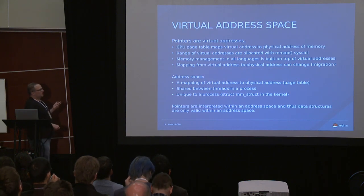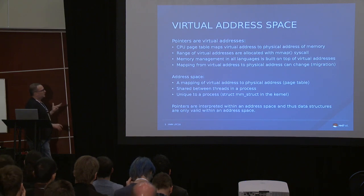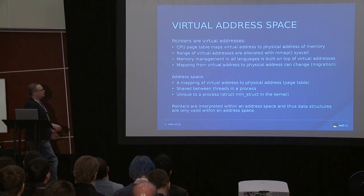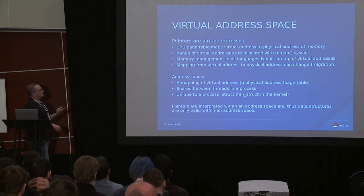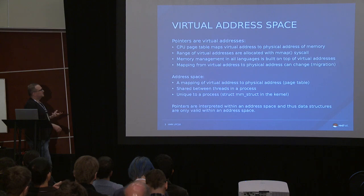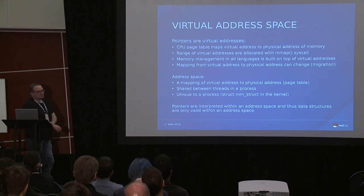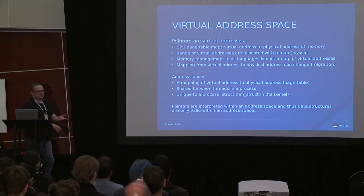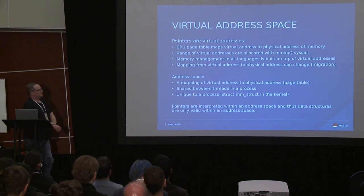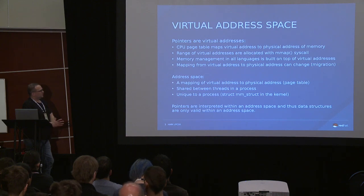Pointers are virtual addresses. From your program's point of view, you don't actually access physical memory — you use virtual addresses. Virtual addresses are translated to physical memory with the help of the CPU page table. The CPU page table simply maps the virtual address to physical memory. The way you allocate virtual addresses is usually with mmap, but when you're using C or C++, it's going to be malloc, new, or whatever the language exposes — all of which ultimately call mmap as a syscall to the Linux kernel.